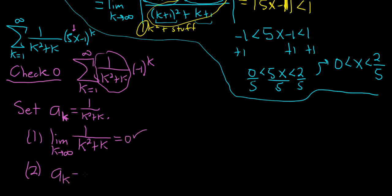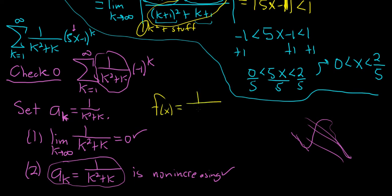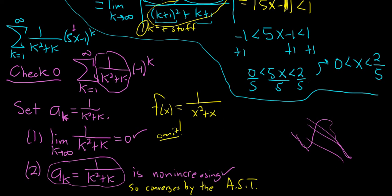The second condition is that the sequence is non-increasing — meaning the terms get smaller and smaller. You can clearly see that as k gets bigger, things get smaller and just keep getting smaller. You could verify this by letting f of x equal 1 over x squared plus x and showing its derivative is negative, but I'll omit that here. Because we have both conditions satisfied, it converges by the alternating series test. So we include a bracket at zero.